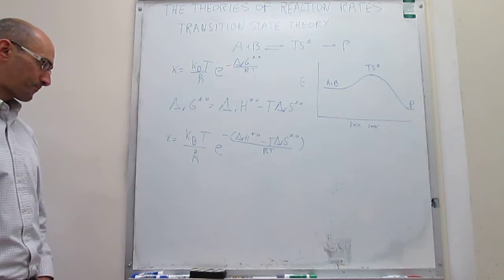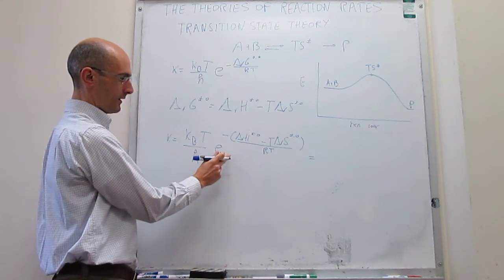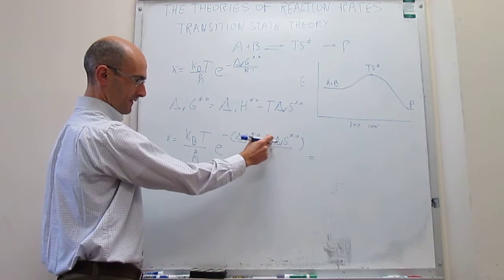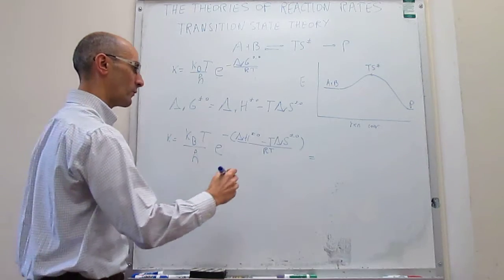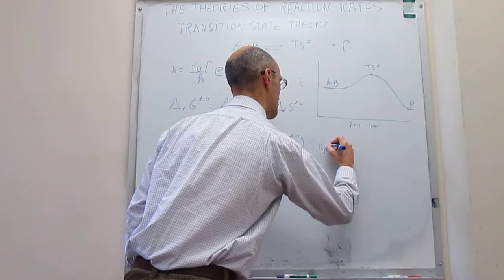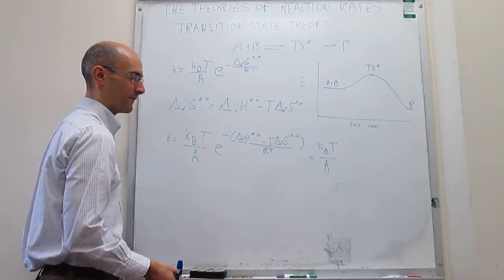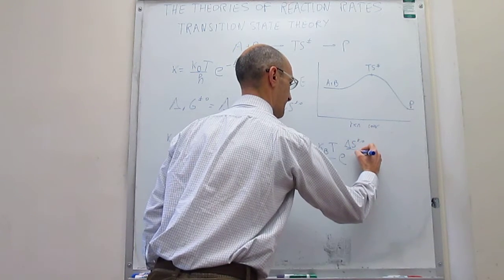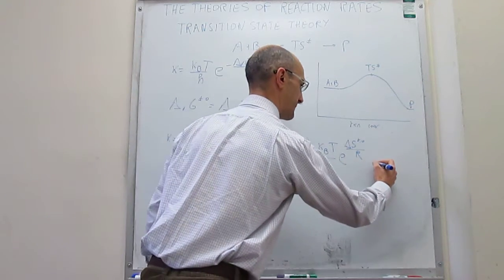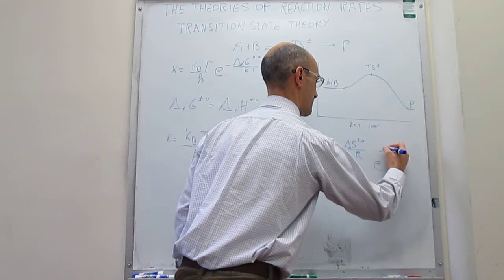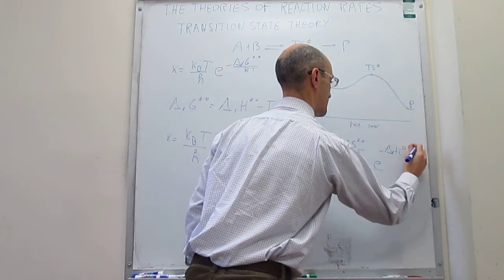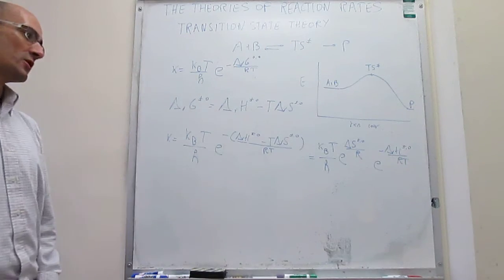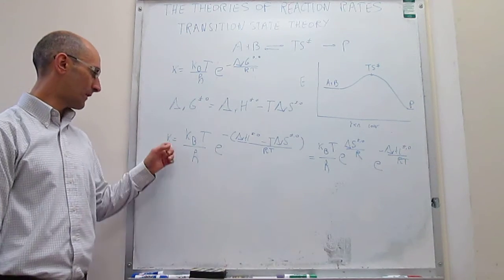Folding that all out, we're going to have two terms: e to the minus delta H over RT, and then e to the plus delta S over R, since the T cancels. So we can rewrite this as K_B T over h, and writing the entropy term first, which will be e to the delta S of activation over R, and then the term that depends on the enthalpy of activation: e to the minus delta H of activation over RT. This is now how we calculate our rate constant with transition state theory.